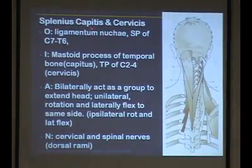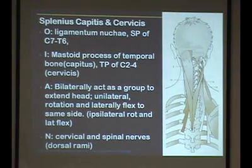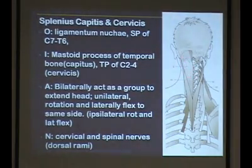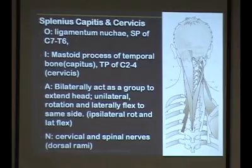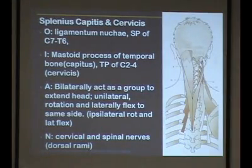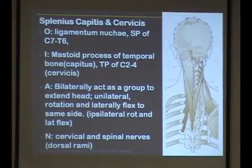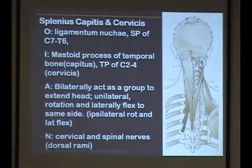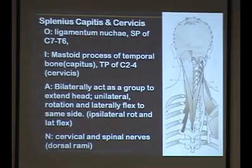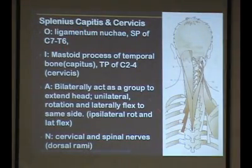Here's splenius capitis and cervicis. The splenius capitis comes from the ligamentum nuchae — a ligament attached to the back and spinous processes in the neck. As the spine curves in, the spinous processes are deep, and the ligamentum nuchae is basically an extension running down the center of the back of the neck from the spinous processes to the skin, giving these muscles a place to attach. It originates from the ligamentum nuchae and the spinous processes of C7 to T6.